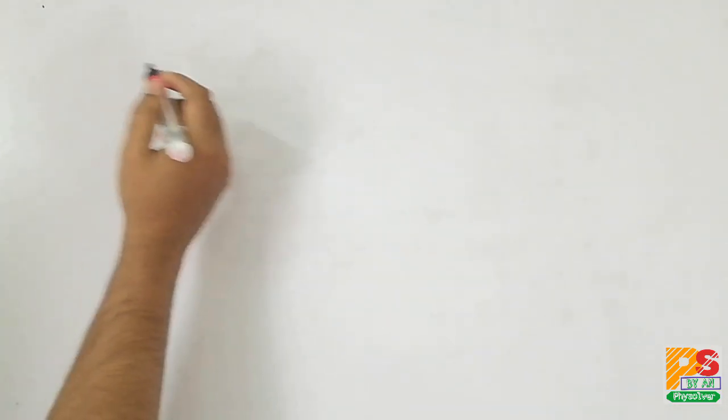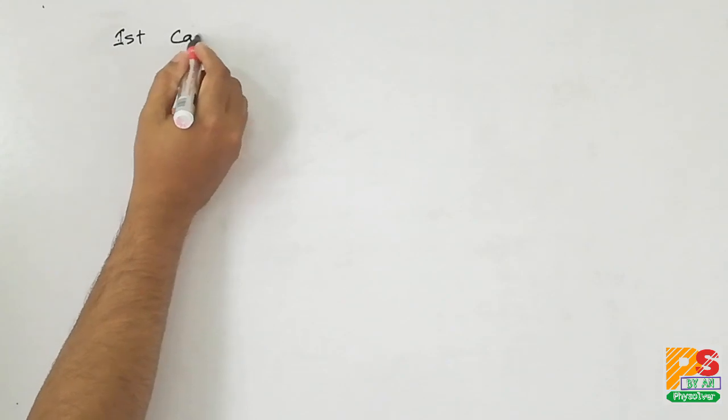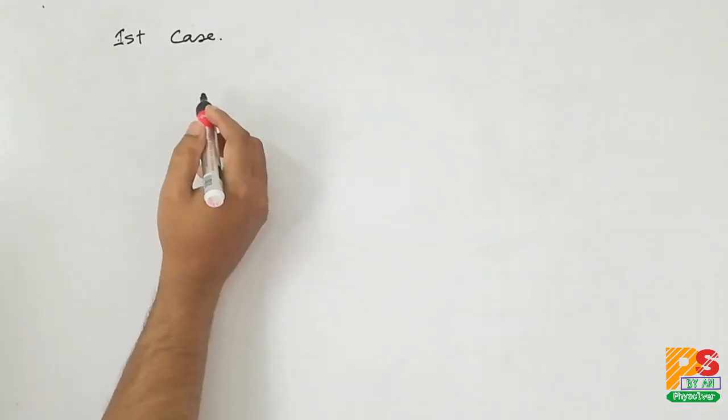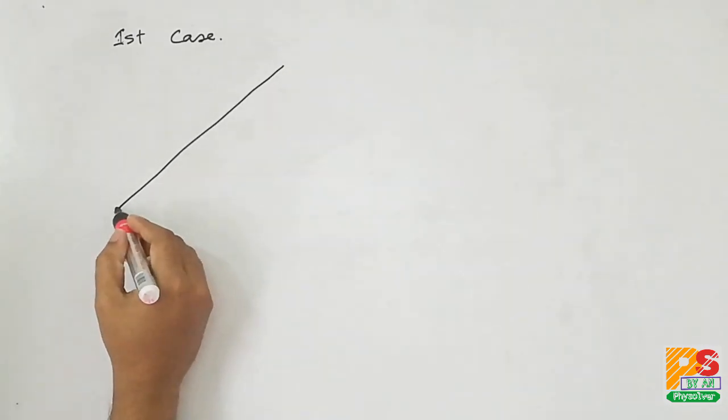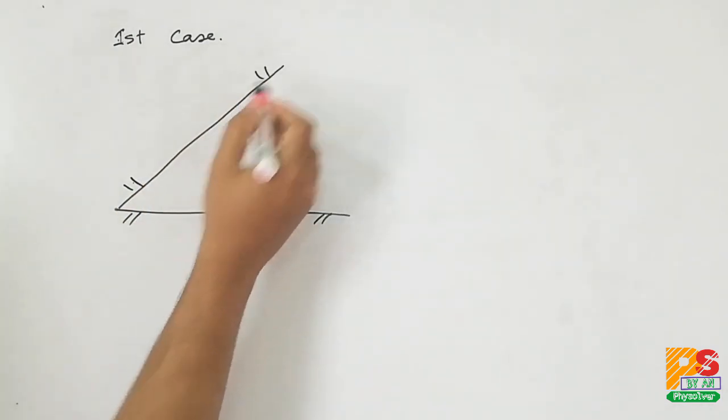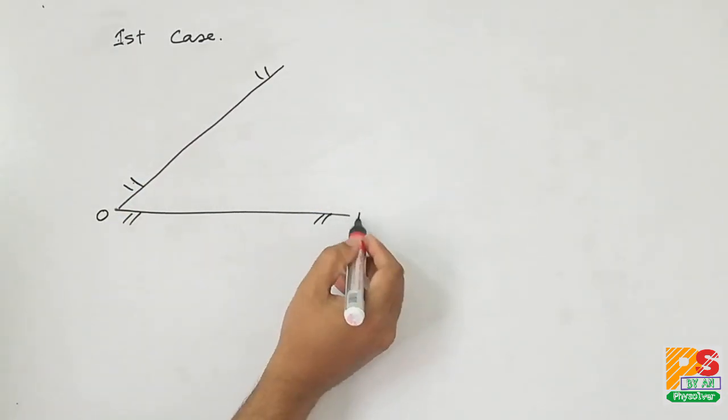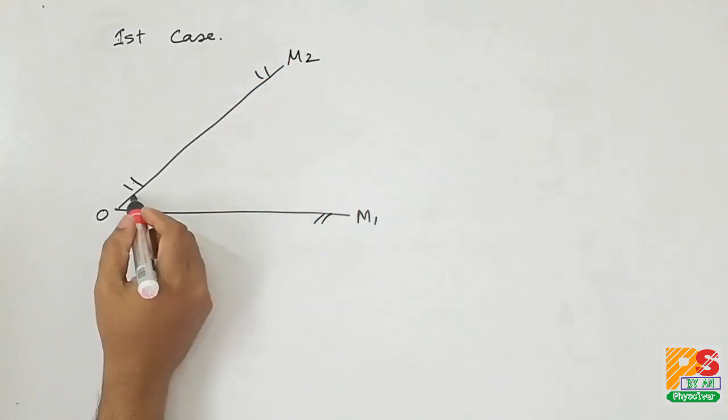Hello students. In this question, two mirrors are inclined at an angle theta. Let's name the mirrors OM1 and OM2.